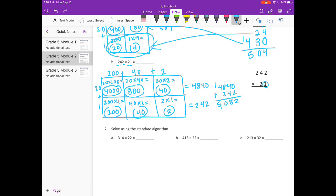So we start in the ones place. 1 times 2 is 2. 1 times 4 is 4. 1 times 2 is 2. Put our 0 as the placeholder. 2 times 2 is 4. 2 times 4 is 8. And 2 times 2 is 4. So we have our 242 right here and our 4,840 right there.